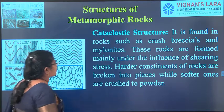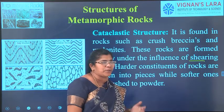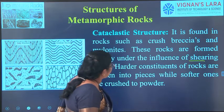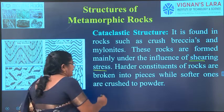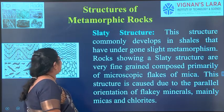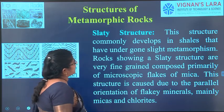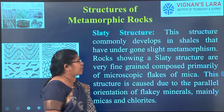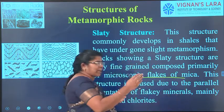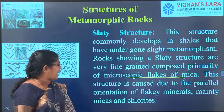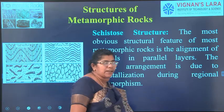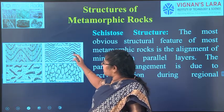Metamorphic rocks are formed mainly due to pressure and temperature, while cataclastic structures are formed mainly due to shearing stress — harder constituents of rocks are broken into pieces while softer ones are crushed to powder. Slaty structure develops in shapes that have undergone slight metamorphism. Rock showing slaty structure is very fine-grained, primarily with microscopic flakes of mica, having a flake-like structure. The structure is caused due to the parallel orientation of flaky minerals, mainly micas and chlorites. Schistose structure is the alignment of minerals in parallel layers, arranged by recrystallization during regional metamorphism.